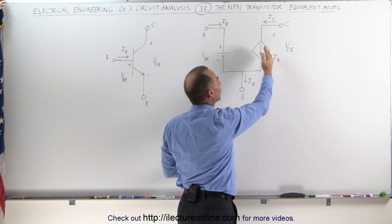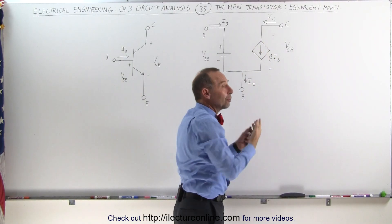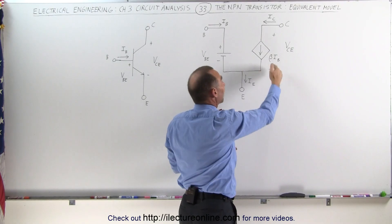If the base current goes to zero, the current here goes to zero. If the base current increases, the current from the collector to the emitter increases by a factor of the beta times the base current.